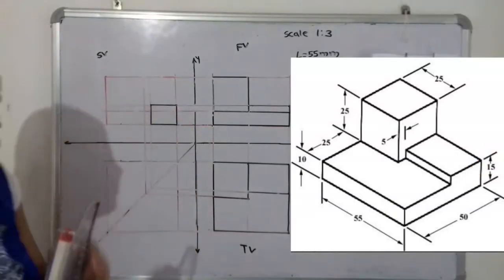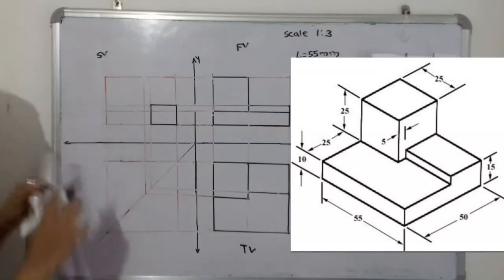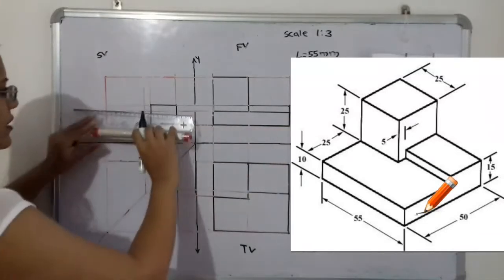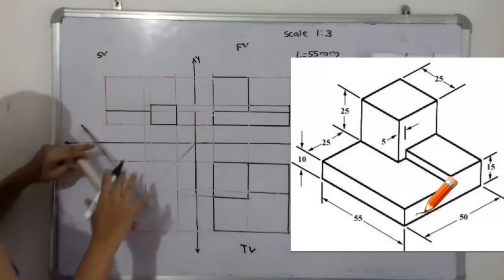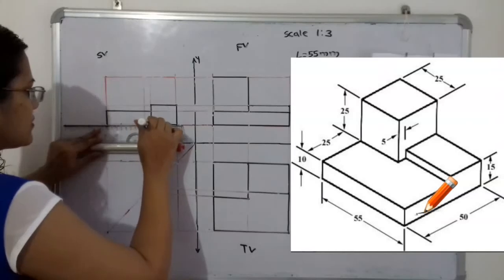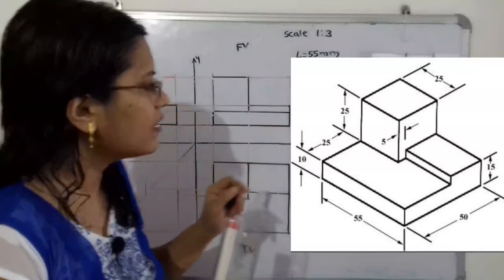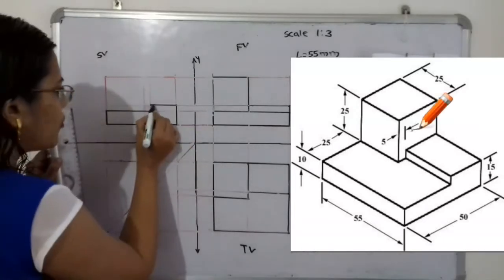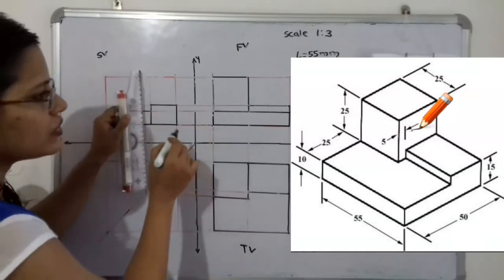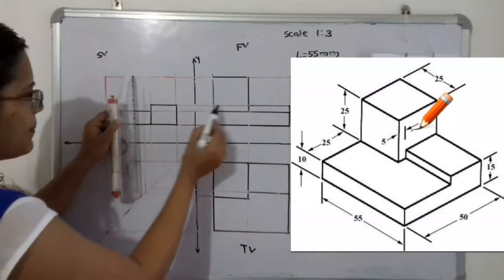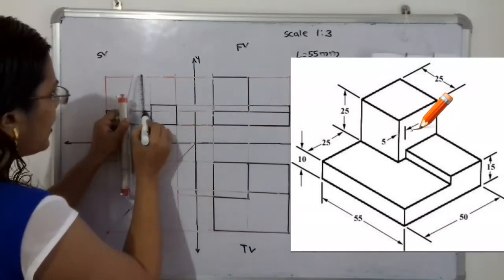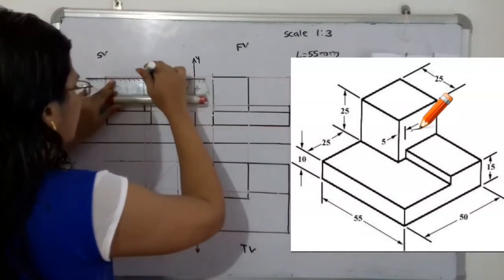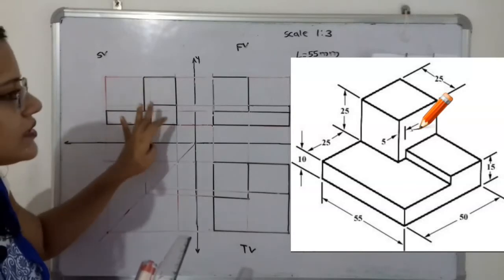The small block construction is complete. On the other side there is a 10mm height construction, already projected, which we complete and mark with a dark marker. Behind the small block there is a 25×25mm block — the height is 25mm — and we complete this block to finish the side view.